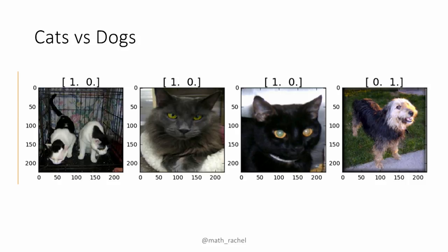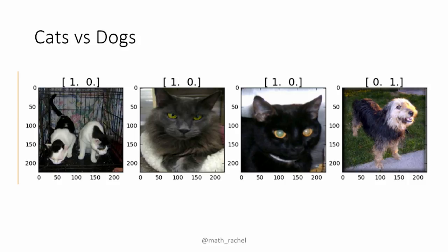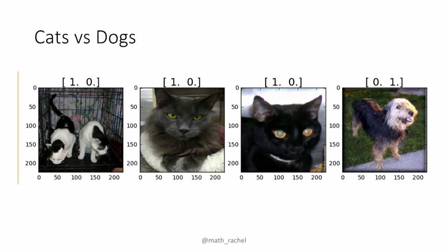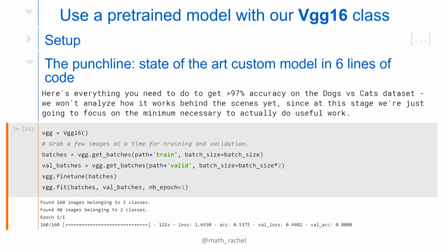About the class: it's all in Jupyter Notebooks. We use a lot of Kaggle competitions because they provide good data sources and clear metrics for what good performance is. We start off with cats versus dogs — a Kaggle competition involving a set of images to determine if they're cats or dogs. This is from our Lesson 1 notebook; we get almost straight to the punchline: a state-of-the-art custom model in six lines of code.